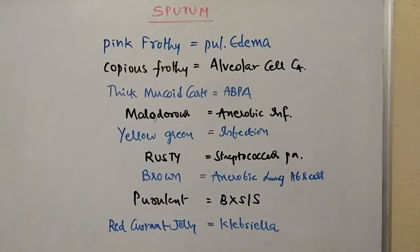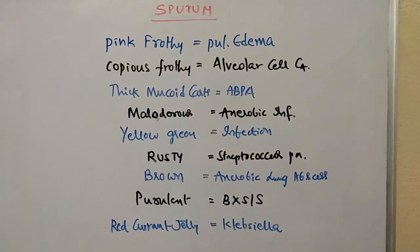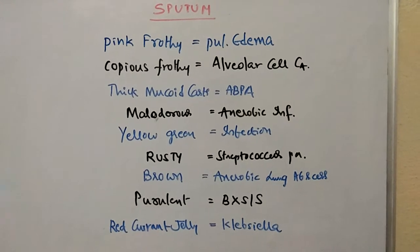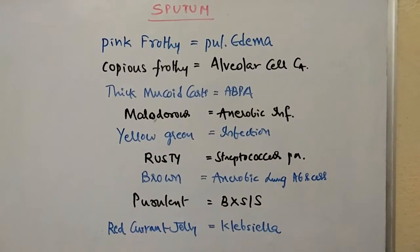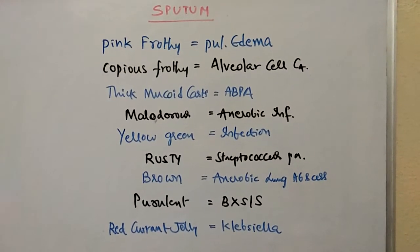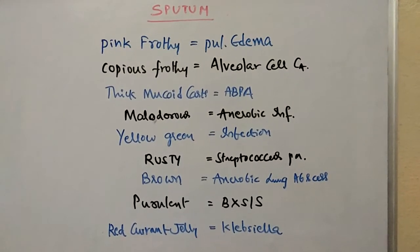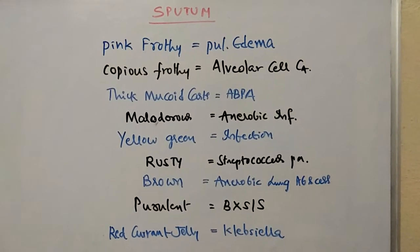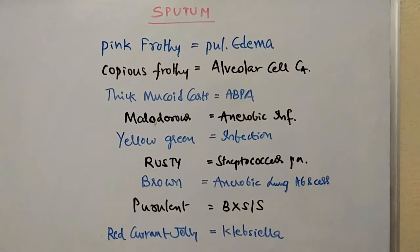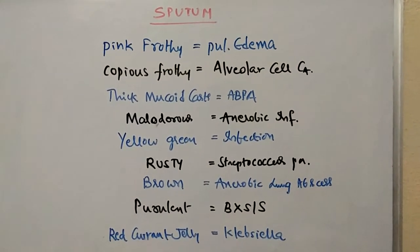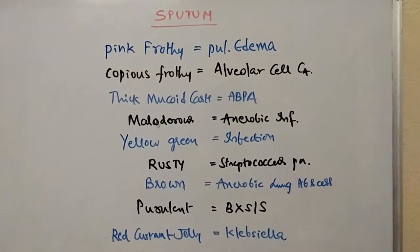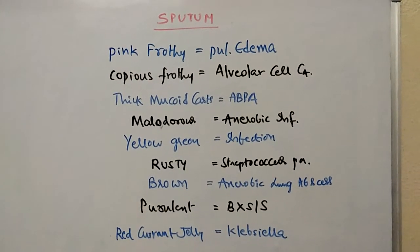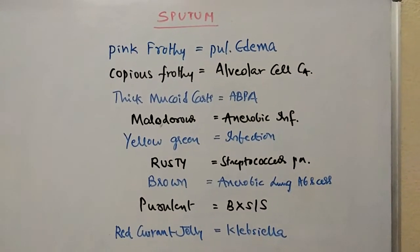Hello everyone, let us learn about sputum and its characteristics today. Sputum is mainly produced from the lower respiratory tract. The ideal sputum should contain less than 10 epithelial cells, and sputum with a greater number of alveolar macrophages and fewer epithelial cells is considered ideal.